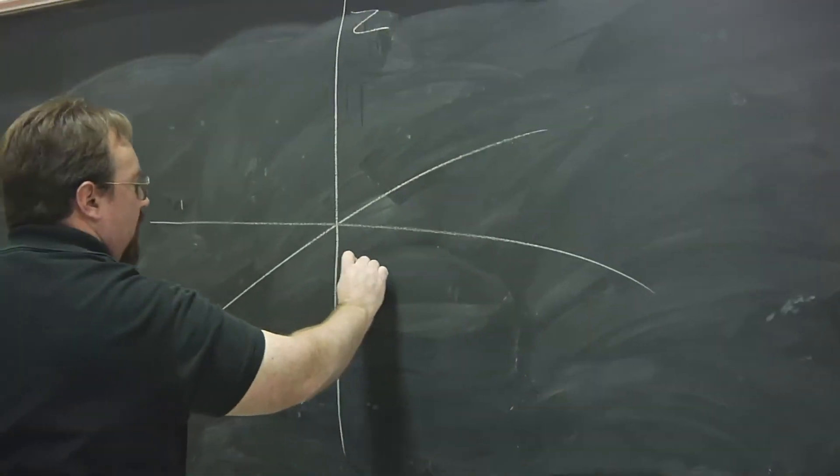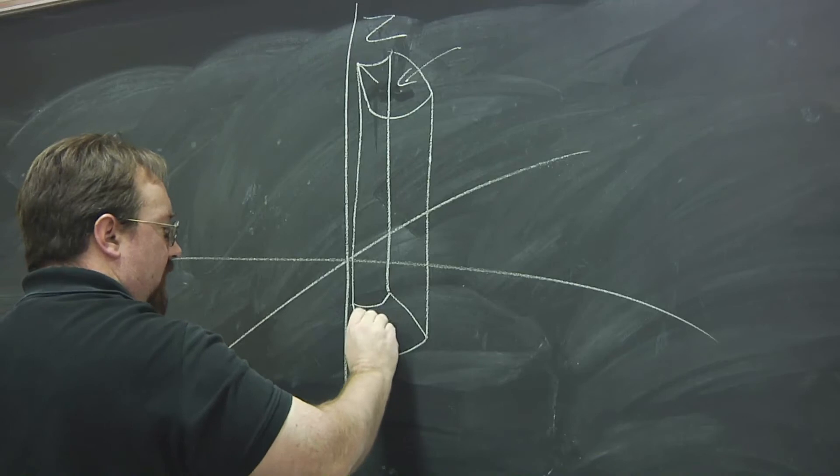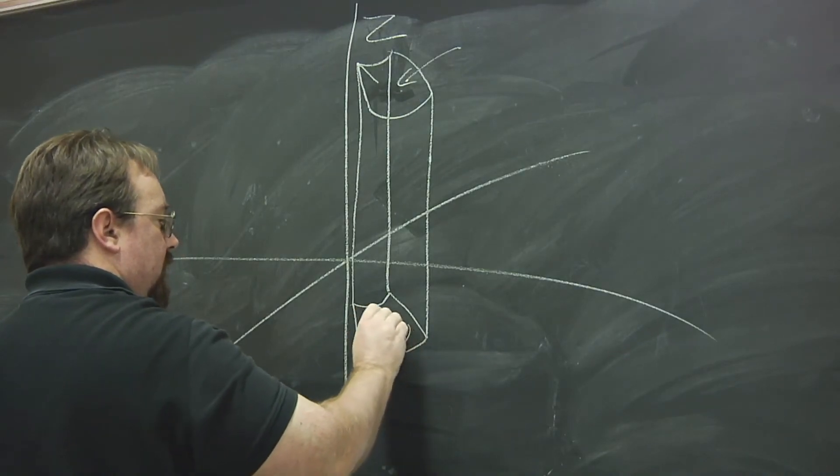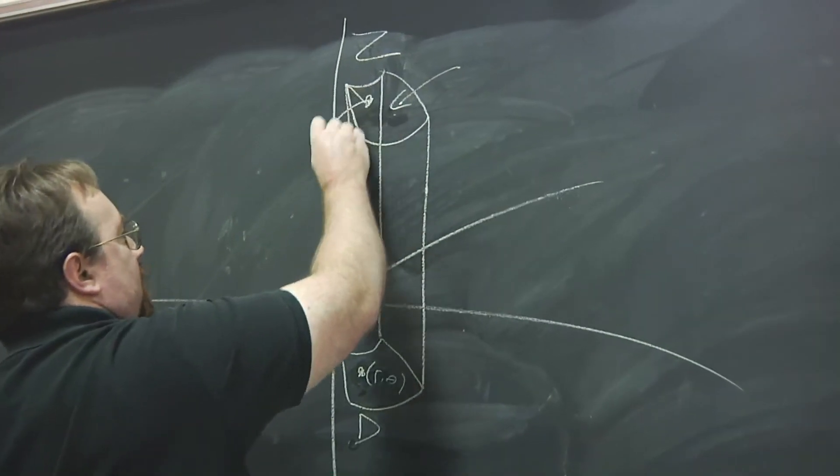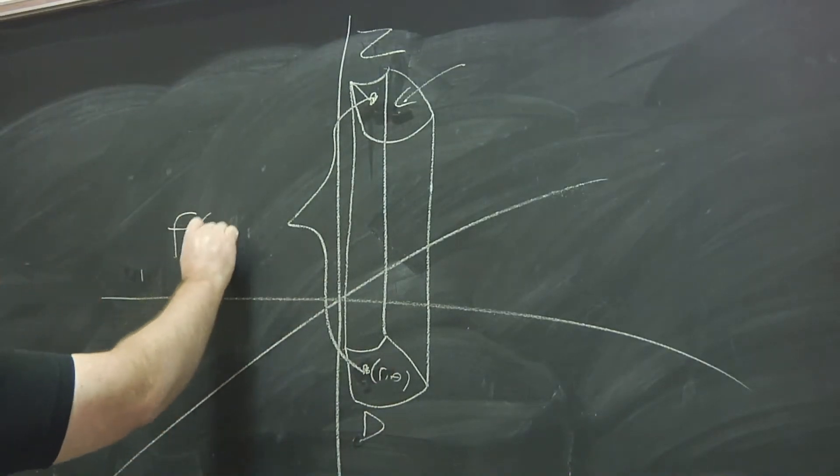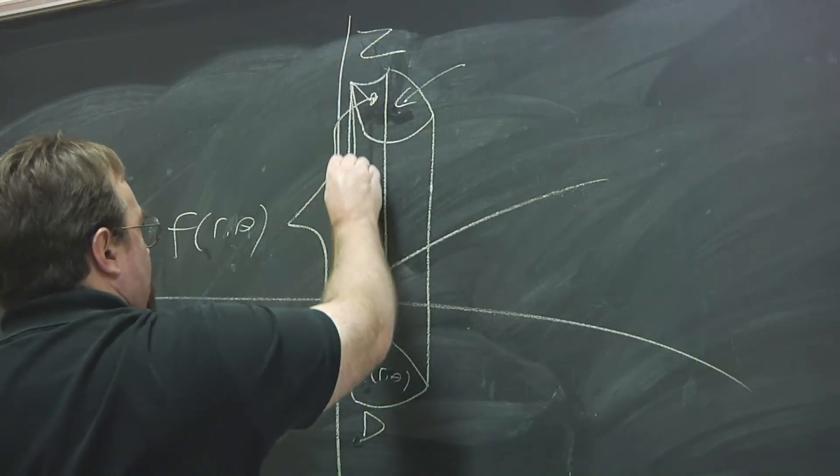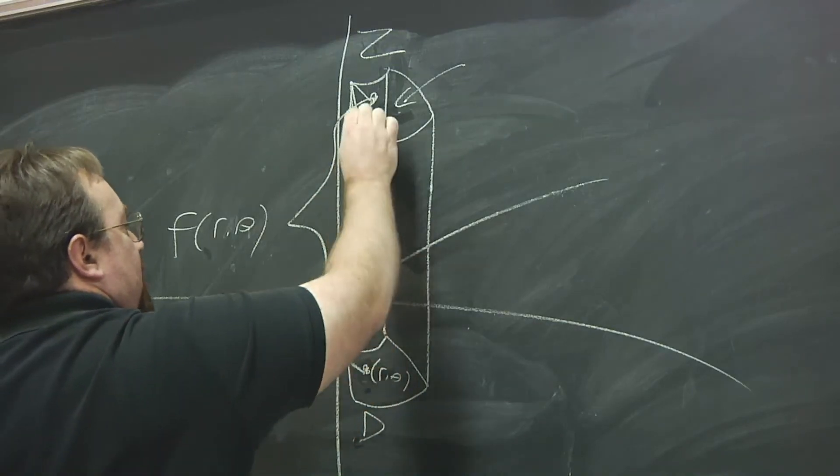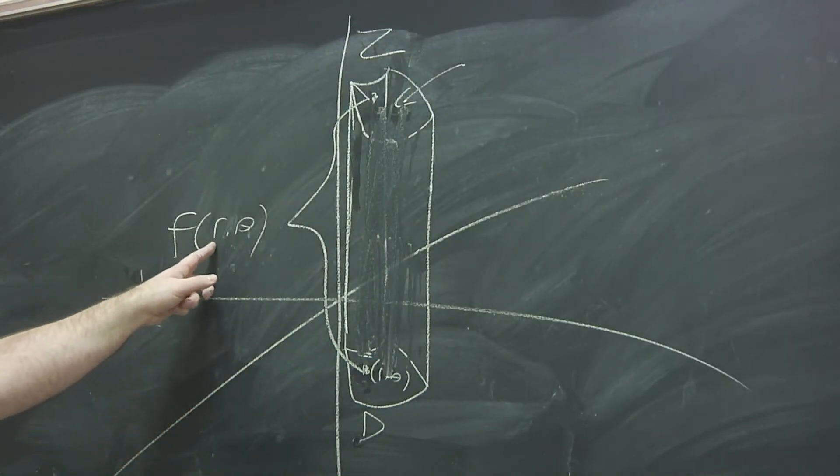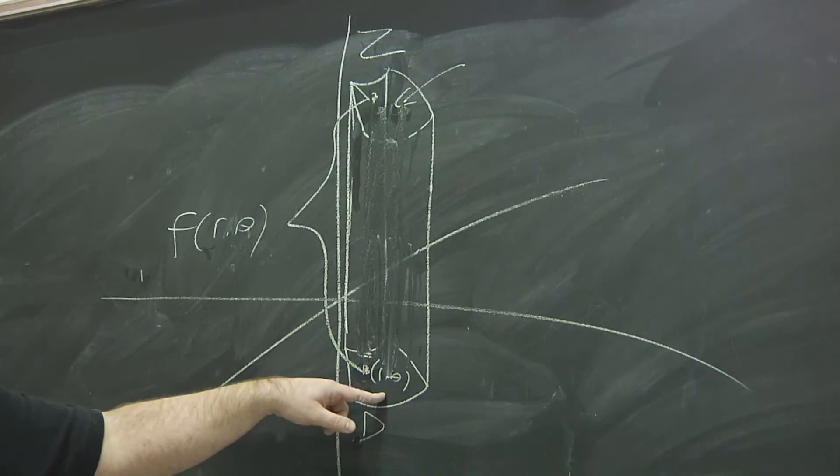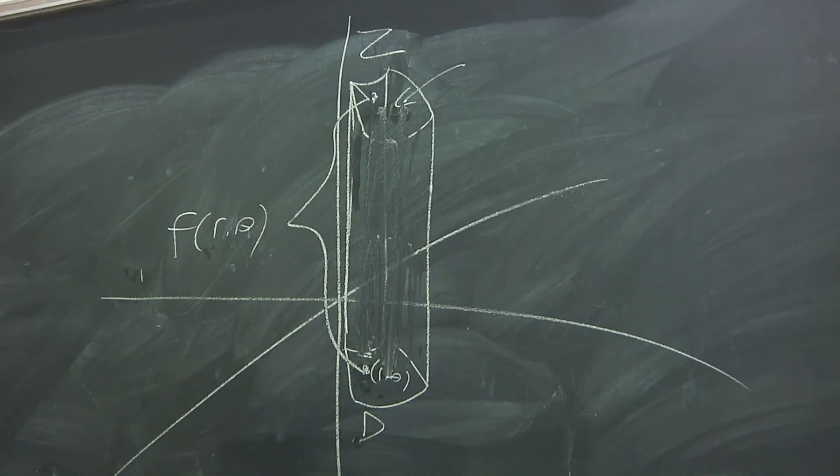Alright, so here is our polar rectangle, here's D. And the height at every point, if we have any point r theta in D, then the height of the solid at that point is given by this distance f of r theta. So we want to compute the volume of this solid by integrating f of r theta over this region D. But because what we have here is not a real rectangle but a polar rectangle, we have to be careful about how we do it.